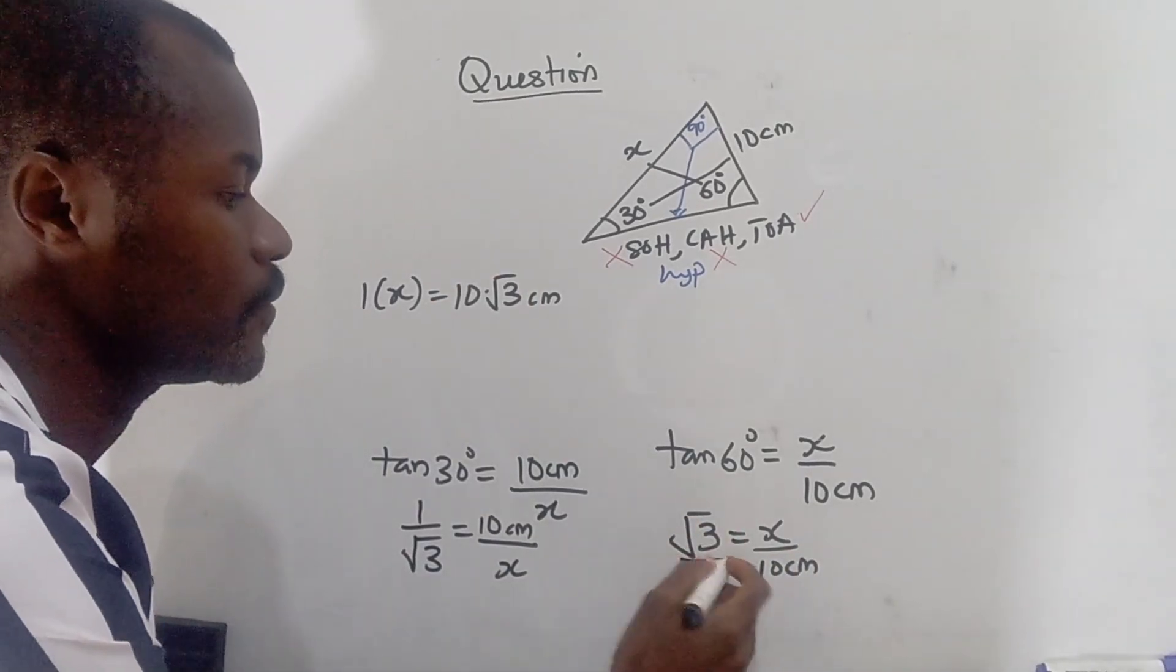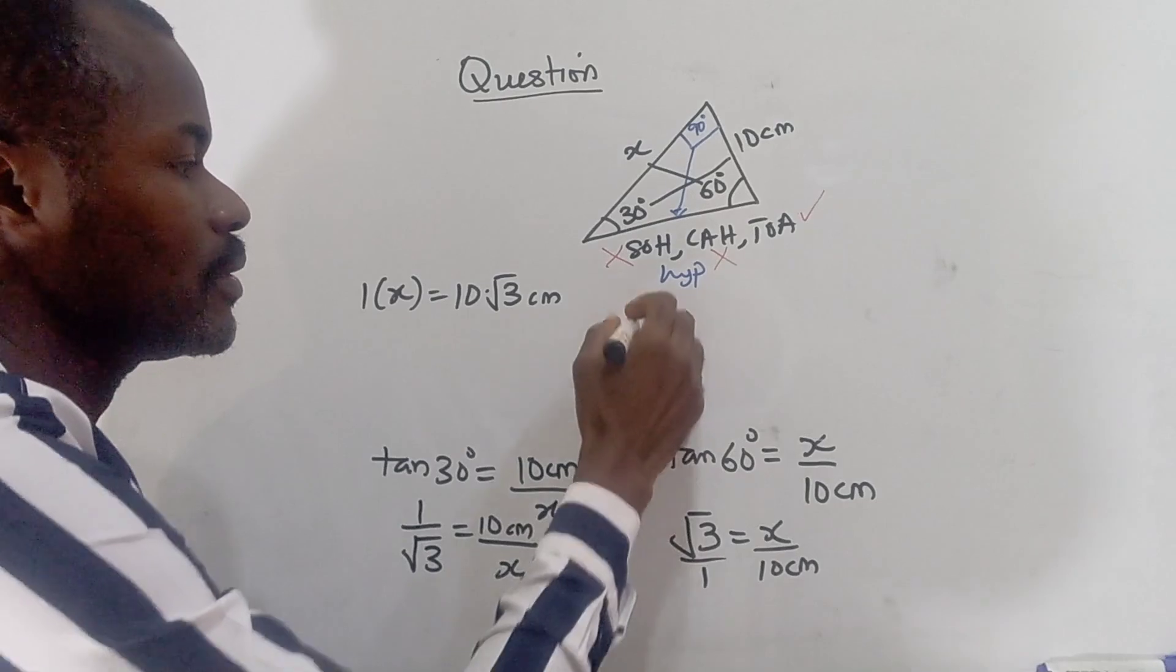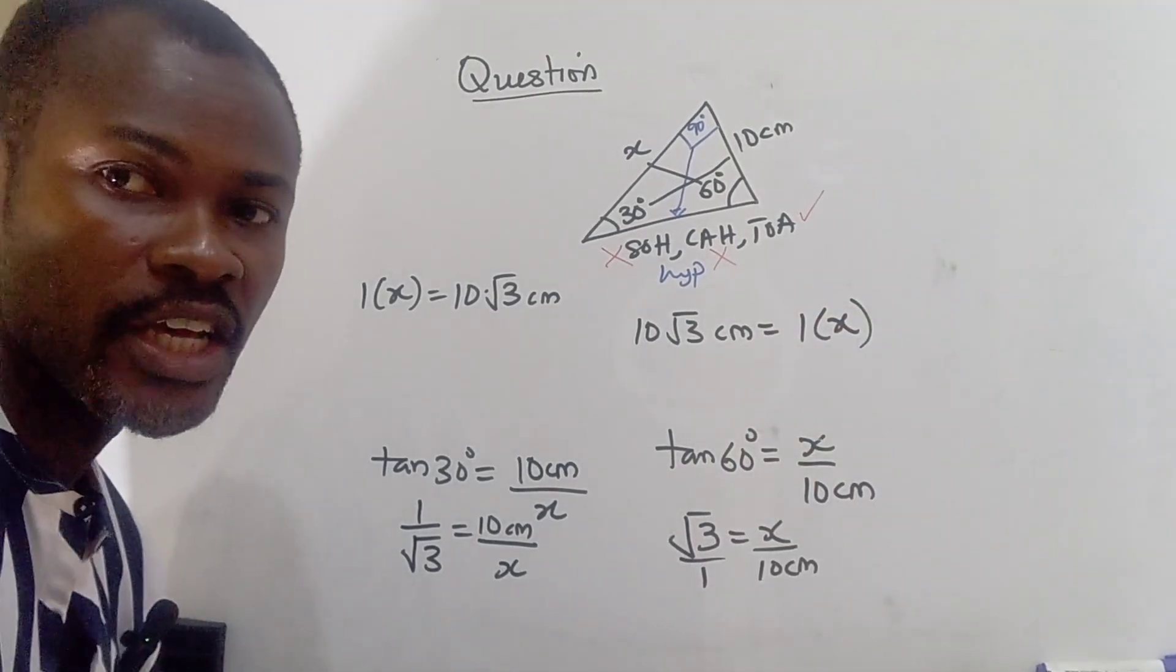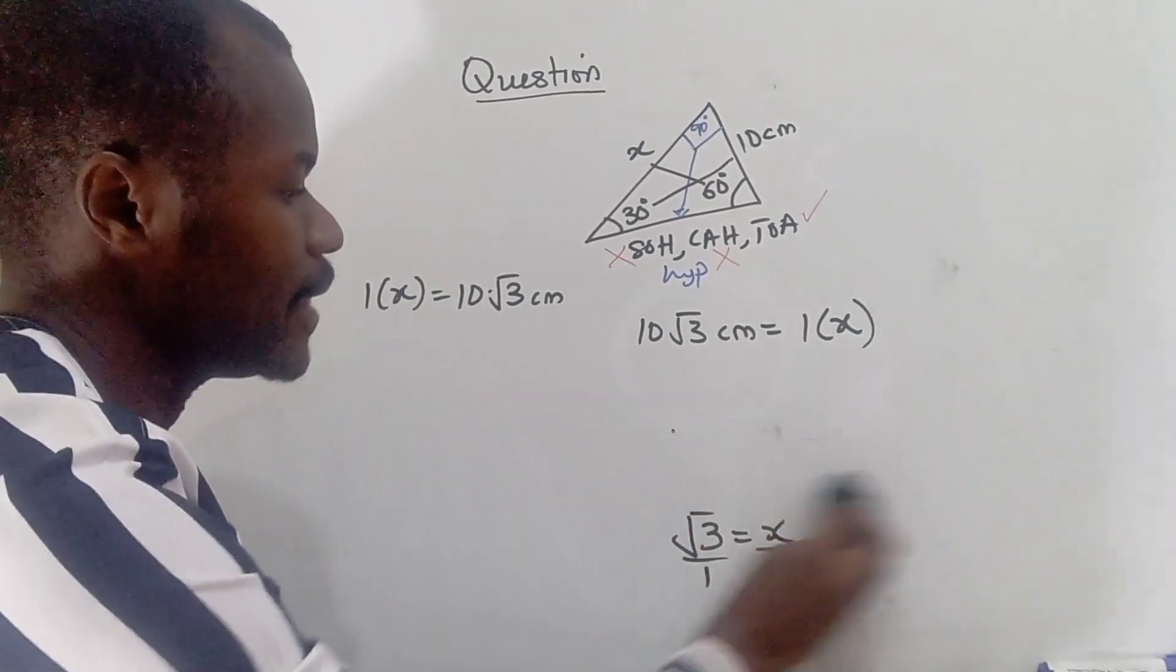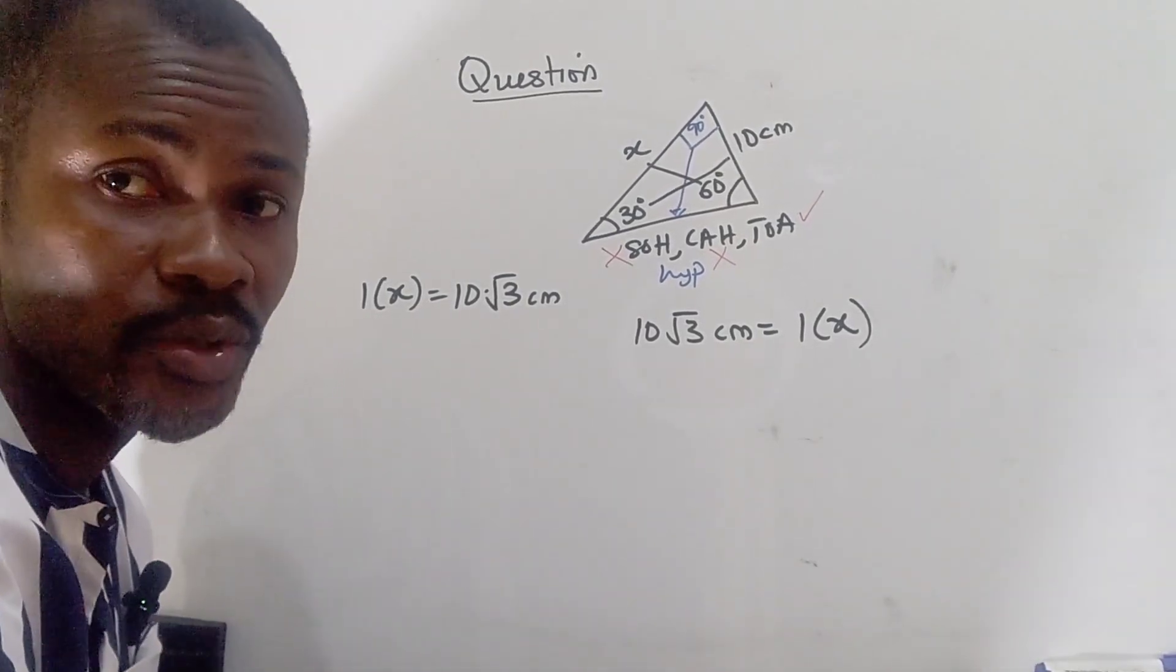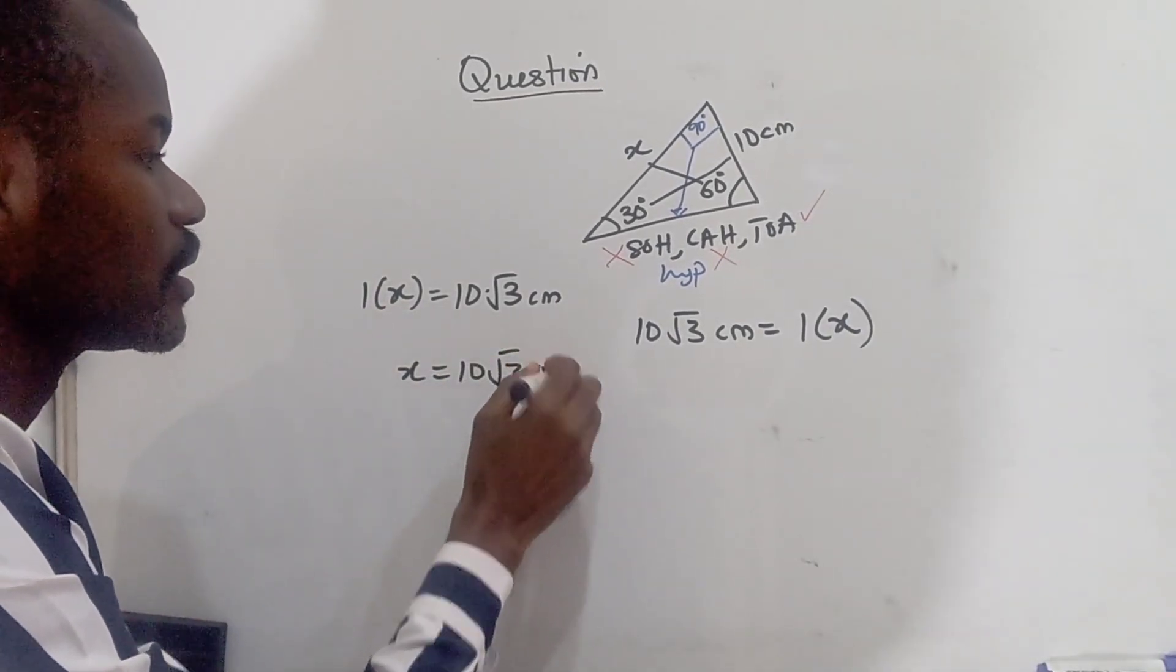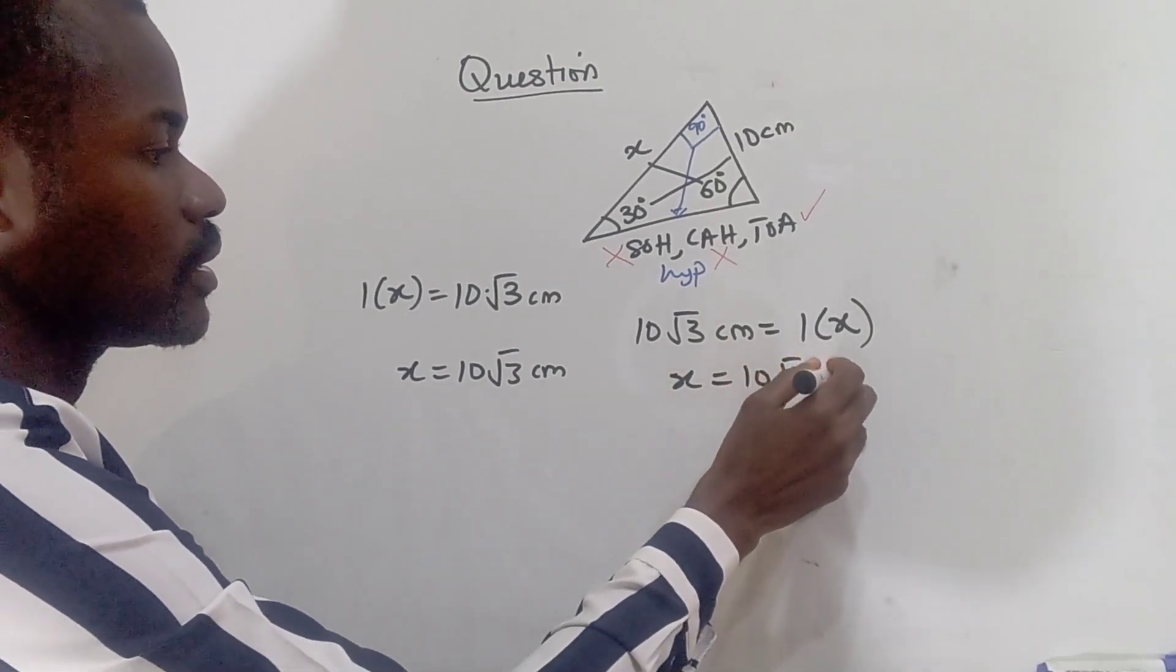If we also do the same here, we have 1 times x. So we have 10 times this. So 10 root 3 centimeter is 1 times x. So whichever direction you cross multiply, whether you're using tan 30 or tan 60 to solve, you are still going to arrive at the same answer. So 1 times x is x, which is 10 root 3 centimeter.